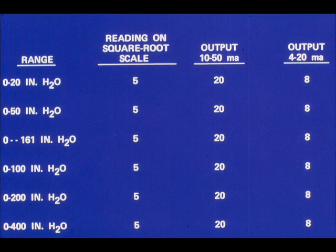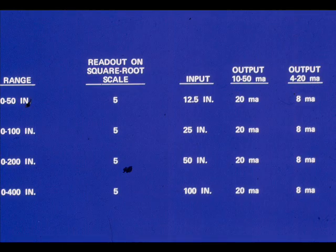Note that for a given reading on a square root scale, the output is the same regardless of the range. To give a reading of 5 on the square root scale, the input to each transmitter is different. However, in each case, the reading of 5 represents 25% of the input span. This has been a brief review of flow scales studied in other modules.